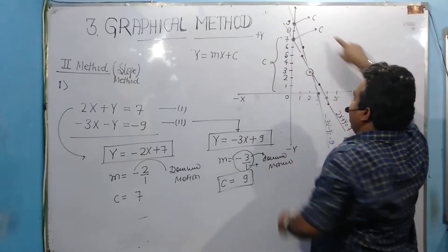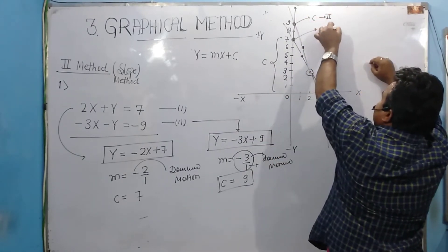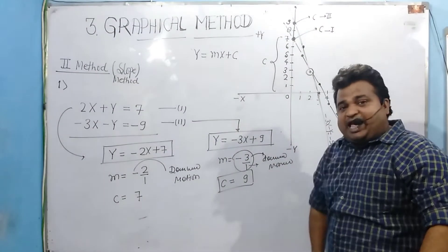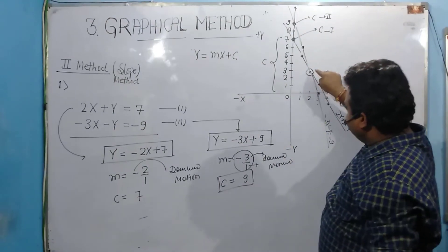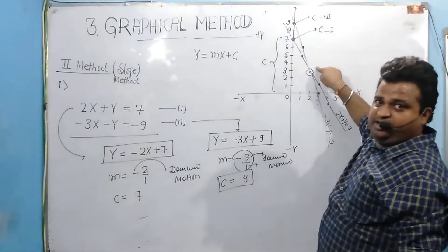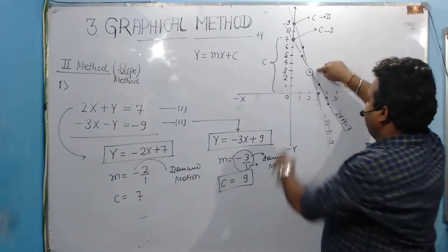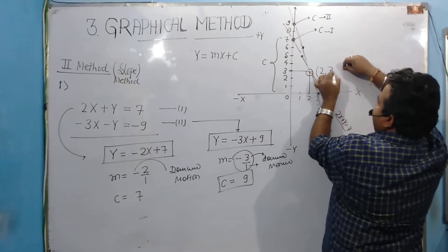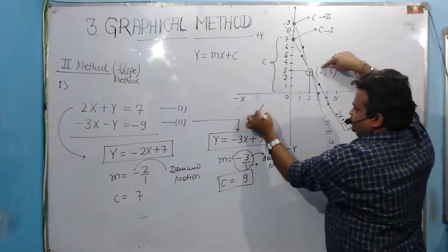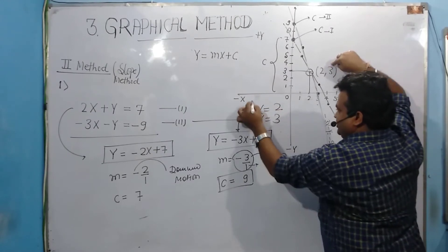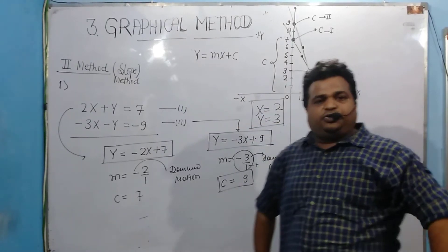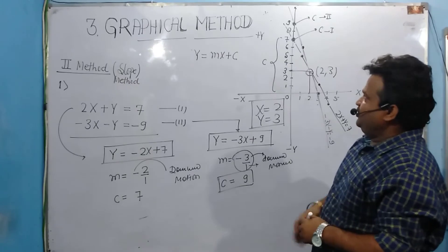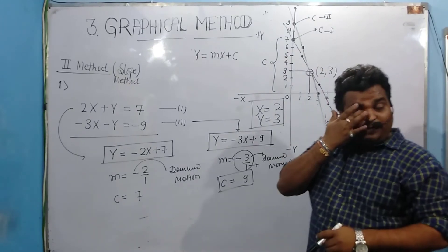The c-value for equation 2 and the c-value for equation 1 are marked on the y-axis. Both lines pass through their respective c-points and have one common intersection point — this is my solution. The coordinate of this intersection point is x = 2 and y = 3. So x = 2, y = 3 is the solution of these equations.